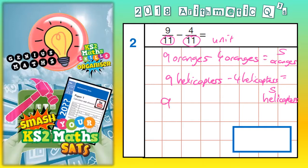So 9 elevenths take away 4 elevenths. The unit that we're dealing with is elevenths. So the unit we're dealing with in the answer has to still be elevenths. So 9 elevenths take away 4 elevenths is 5 elevenths. And that's our final answer, 5 elevenths.